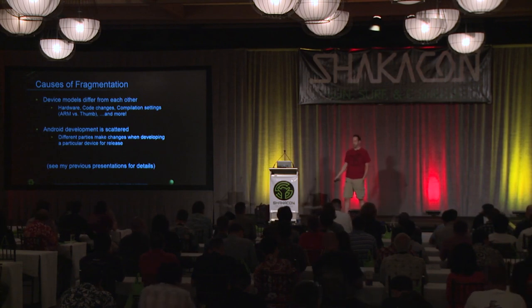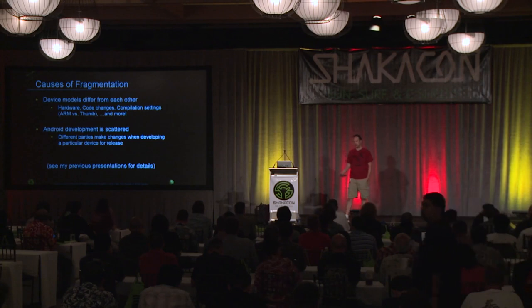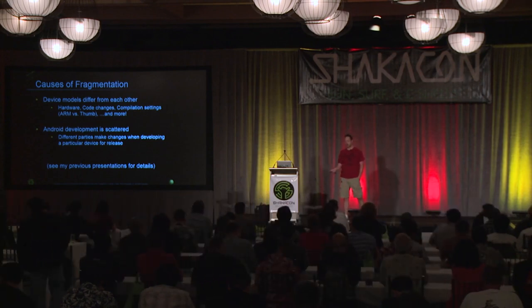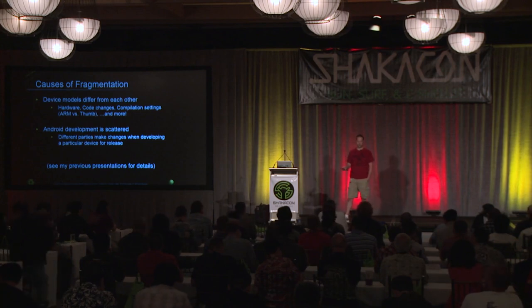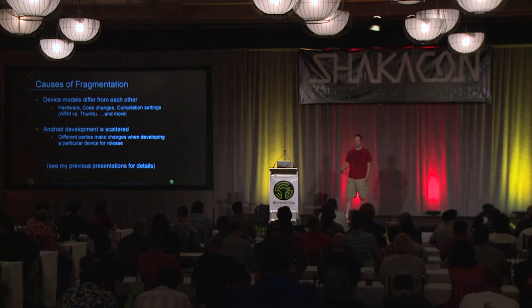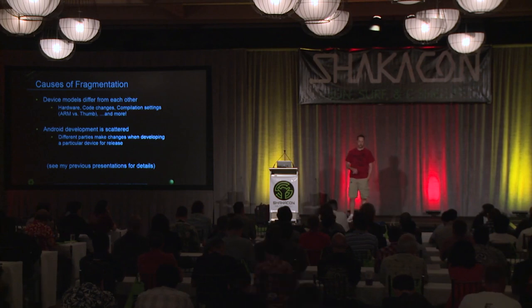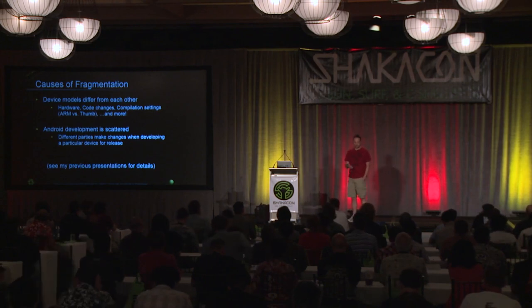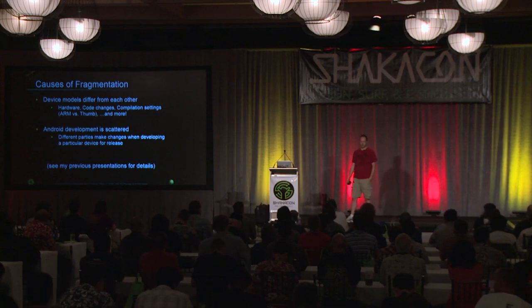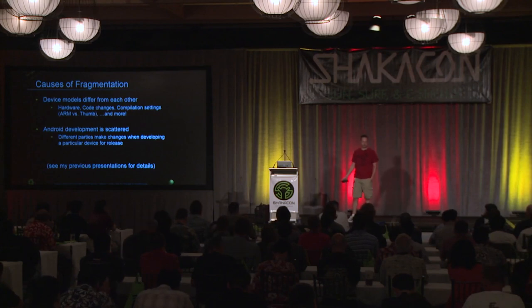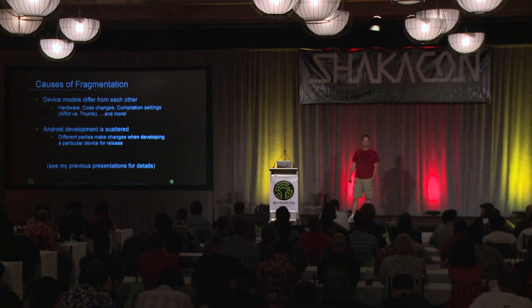Some devices have completely different hardware. A good example is the Samsung Galaxy S3, S4, or S5. In the US they have several different versions, and worldwide they have several different versions. The S3 for Sprint is a totally different model number and uses a totally different processor than the global international S3. So even within a single thing marketed with one name, you may have completely different things on the inside.